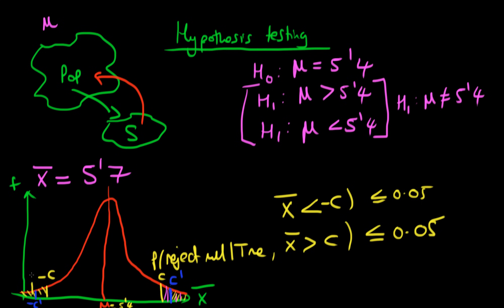We choose c-prime and minus c-prime such that the probability in each of these tails is 0.025. So the probability that we reject the null hypothesis given that it's true — with the probabilities adding up to 0.05 — gives us a two-tailed test. There are two ways to reject the null: if the mean height is significantly greater than our null hypothesis value, or if x-bar is significantly less than our null hypothesis value.